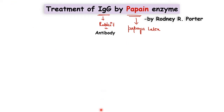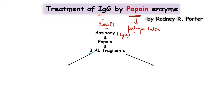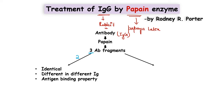When we treat IgG with Papain enzyme, it generates three fragments of the antibody. Out of these three fragments, two are identical. They show different sequences and properties in different classes of immunoglobulin, and they show antigen-binding property — they can interact with the antigen. Rodney R. Potter named this fragment the FAB fragment, which stands for antigen-binding fragment.